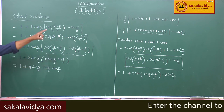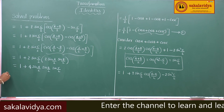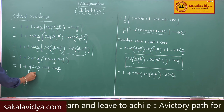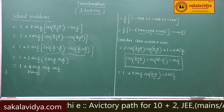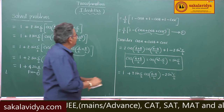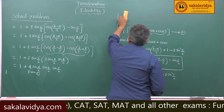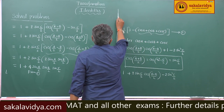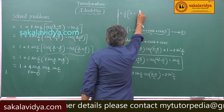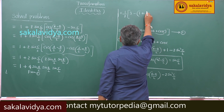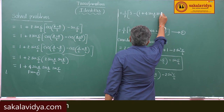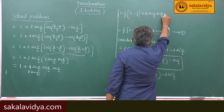Again coming back to our problem, from the left hand side expression, substituting back from equation 1: half into 3 minus (1 plus 4sin(A/2)sin(B/2)sin(C/2)), which gives half into (2 minus 4sin(A/2)sin(B/2)sin(C/2)), equaling 1 minus 2cos(A/2)cos(B/2)sin(C/2).